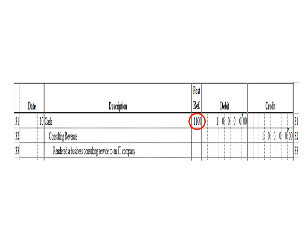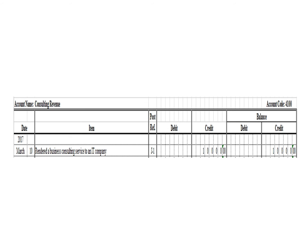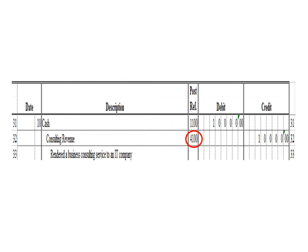Let us post the credit entry — a credit to consulting revenue for 10,000 pesos. To post in the consulting revenue ledger, we write the date March 10, description: rendered a business consulting service to an IT company, posting reference J1. Under the credit column, write 10,000 pesos, and in the balance section under credit, write 10,000 pesos. After posting, write the posting reference 4100, the account code for consulting revenue.